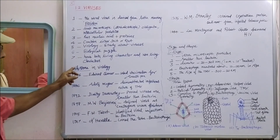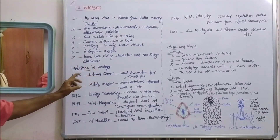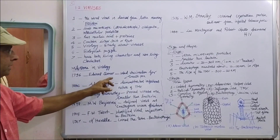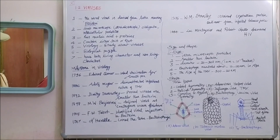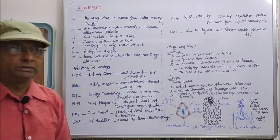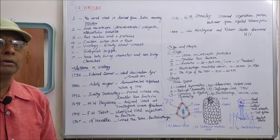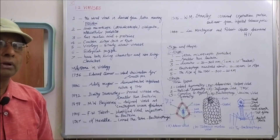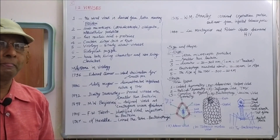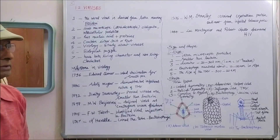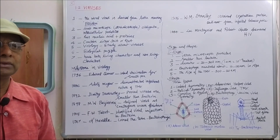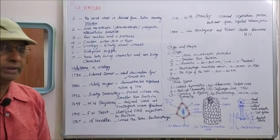Now we move on to milestones in virology. In the year 1796, Edward Jenner used vaccination for smallpox — he discovered the world's first vaccine.